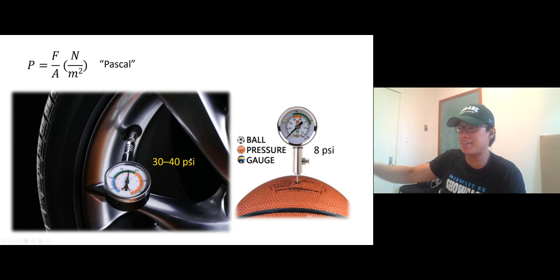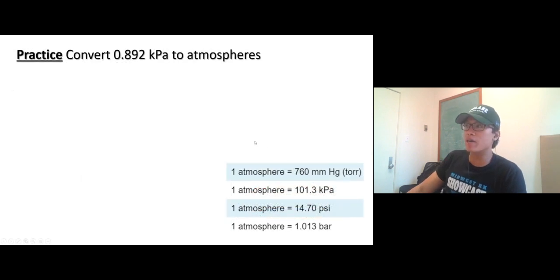Your job is to be able to convert from one unit of pressure to another. In this case, we're doing kilopascal to atmosphere. Pause the video, do it on your own, and then check with me. The unit we want is atmosphere (atm) and what we have is 0.892 kilopascal.